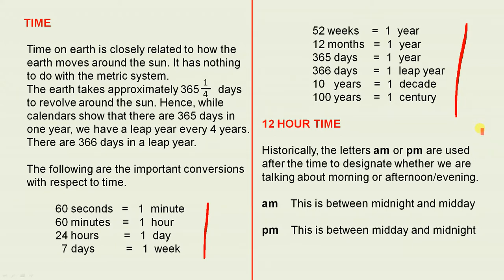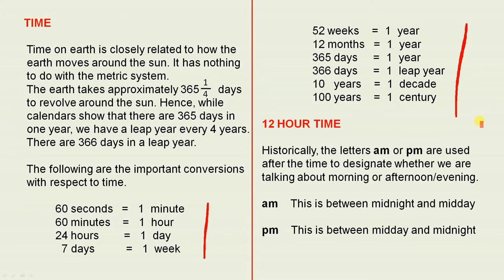Twelve-hour time. Historically, the letters AM or PM are used after the time to designate whether we are talking about morning, afternoon, or evening. AM is between midnight and midday — that's a 12-hour period. PM is between midday and midnight, which is also a 12-hour period.